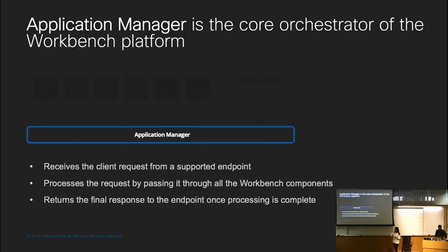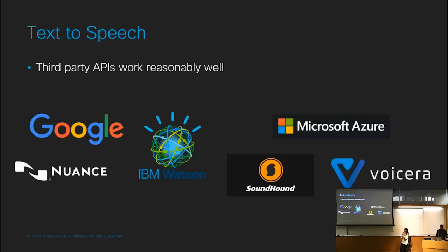The application manager is an underlying layer that passes all information back and forth between each component. It first receives the client request from the supported endpoint, passes it through each of the components, and then returns the final response back to the user. If you are doing a voice-based application, you would have a final additional layer that does text-to-speech, synthesizing the text of the response back into speech. For this, third-party APIs work reasonably well.